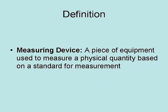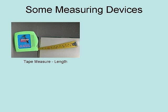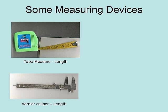Measuring device: a piece of equipment used to measure a physical quantity based on a standard of measurement. Here are examples of some measuring devices, starting with one that most people are familiar with — a simple tape measure, which measures length.